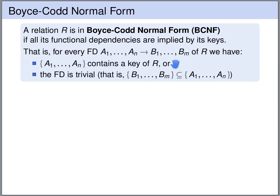In the first case, if the left-hand side contains a key, the key uniquely determines all of the attributes of the relation, so in particular the key uniquely determines the attributes of the right-hand side b1 up to bm, so this key implies the functional dependency. In the second case, our functional dependency is trivial — the right-hand side is a subset of the left-hand side — and trivial dependencies are always implied by any set of functional dependencies. So in both cases, these functional dependencies are implied by the keys of the relation R.